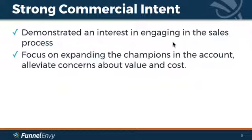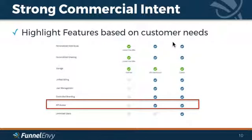Going further down the funnel, we can add value when visitors have strong commercial intent — they've already demonstrated interest in engaging with sales. The focus is on expanding champions in the account, alleviating concerns about value and cost, and making them feel comfortable with the purchase. A great example is your pricing page: highlight features based on customer needs. If they visited the API access page, you know they're interested, so push that to the top of the enterprise plan page to drive engagement and down-funnel conversions.